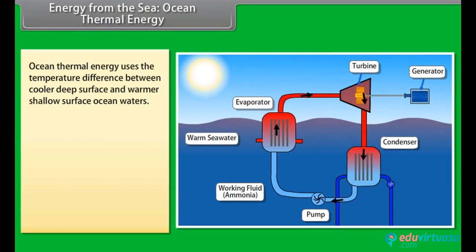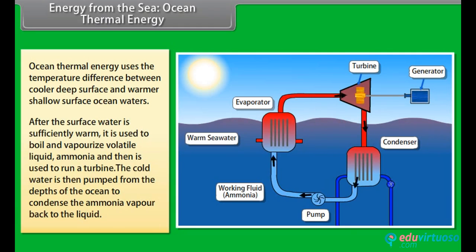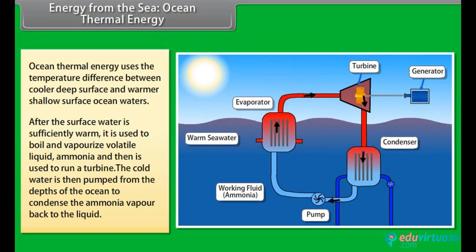Energy from the sea — Ocean thermal energy. Ocean thermal energy uses the temperature difference between cooler deep water and warmer shallow surface ocean waters to run a heat engine and produce useful energy, mainly electricity. The heat engine gives greater efficiency and power when run with a large temperature difference. In the oceans, the temperature difference between surface and deep water is greater in tropical areas, where it is a modest 20 to 25 degrees Celsius. After the surface water is sufficiently warm, it is used to boil a volatile liquid — ammonia. The vapors of ammonia are then used to run a turbine. Cold water is then pumped from the depths of the ocean and used to condense the ammonia vapor back to liquid.